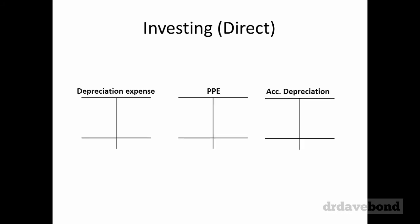Moving to the investing cash flows — same bulletproof approach. We identify the accounts we need: property, plant and equipment, land, any non-current assets, accumulated depreciation, and depreciation expense. Property, plant and equipment changes from $720,000 to $800,000; accumulated depreciation goes from $170,000 to $240,000. Depreciation expense is $70,000 for that year, so debit depreciation expense $70,000, credit accumulated depreciation $70,000 — and that account balances, so nothing unusual there.